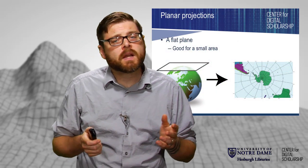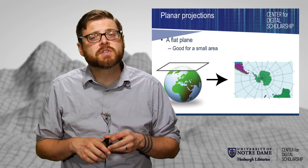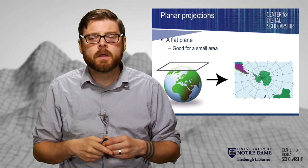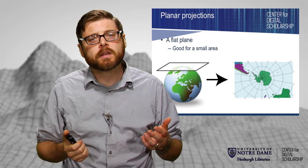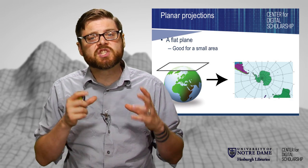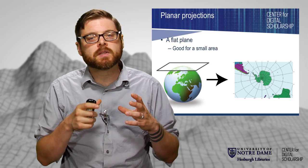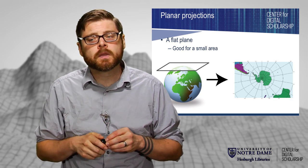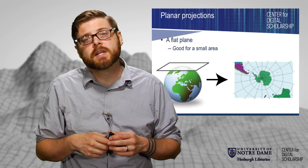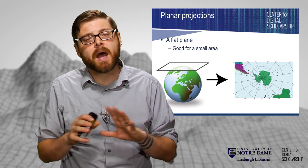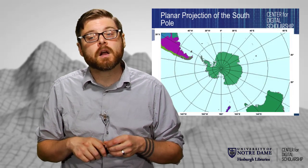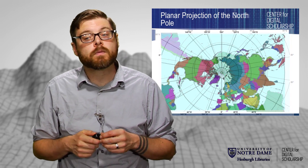The last type we might encounter are planar projections — essentially putting a piece of paper down on the globe and sketching what you see. They tend to work really well for small areas. Most commonly they're used for state planes, where each state has a way to map its particular area, or for the poles, because the poles are almost never well represented using any of the other projections.